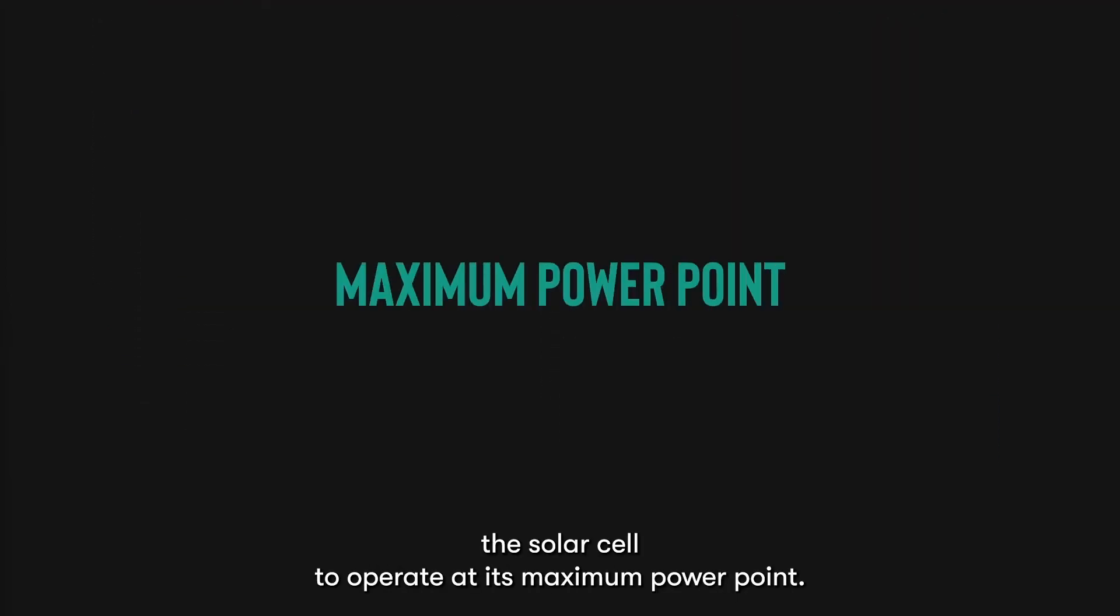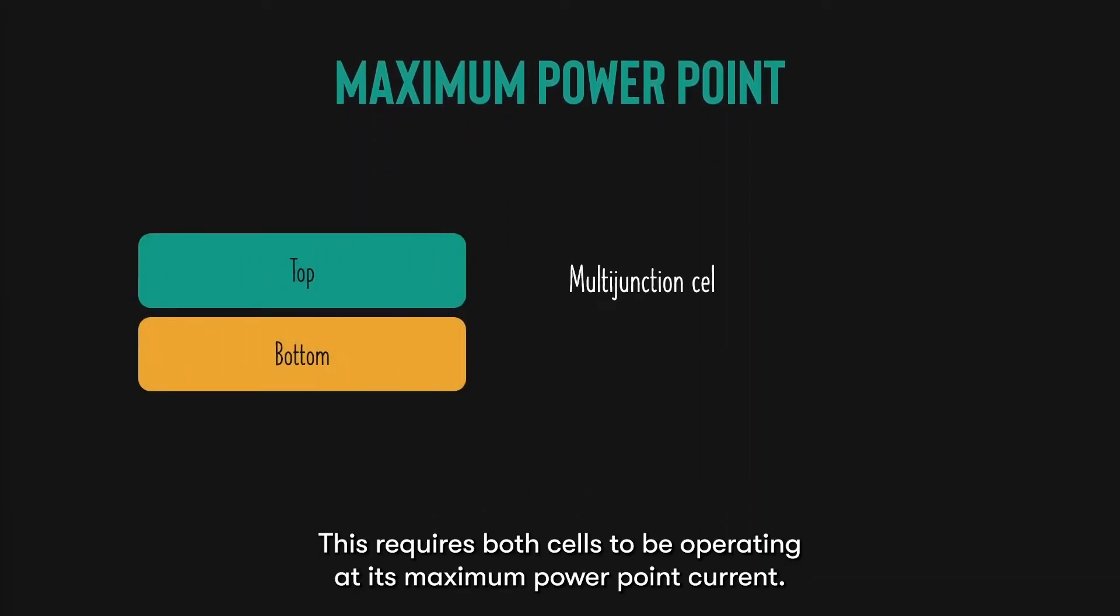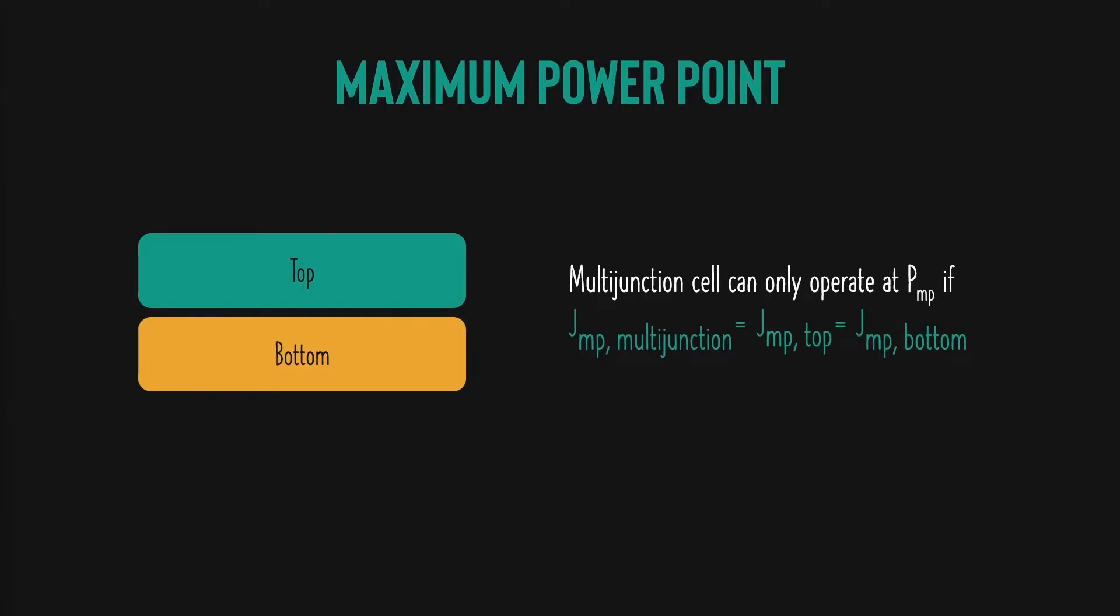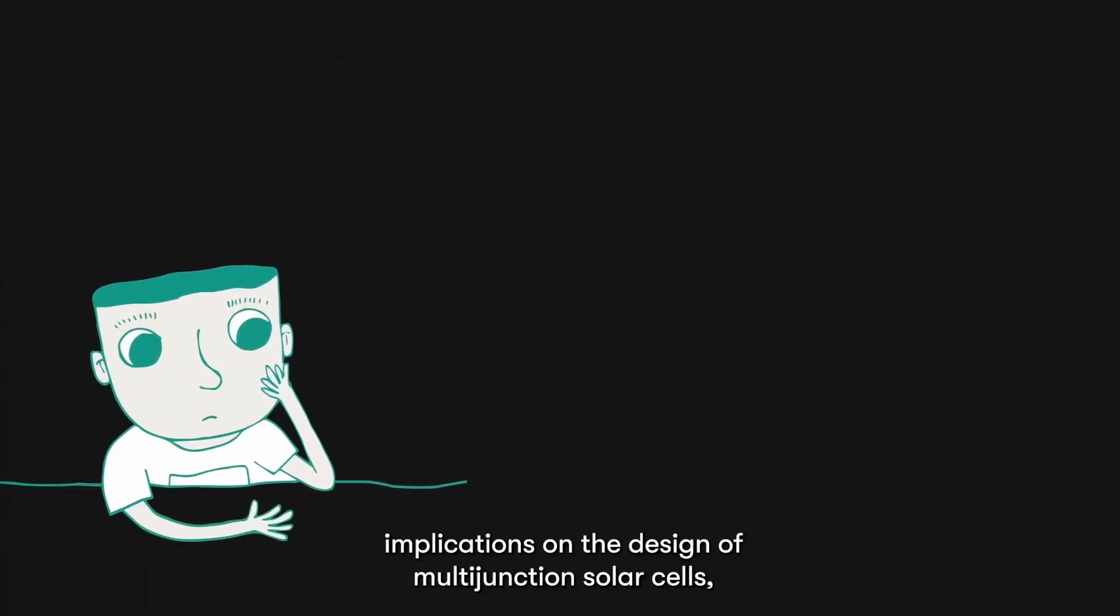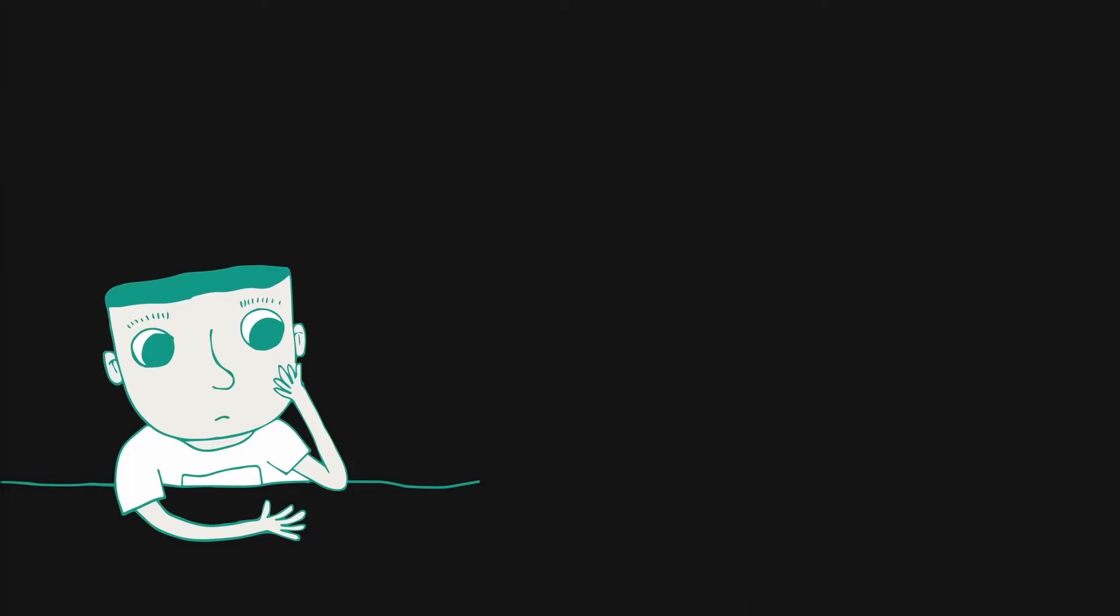We know that we always want the solar cell to operate at its maximum power point. This requires both cells to be operating at its maximum power point current. But if the short circuit currents of both cells are different, it's a good indication that the maximum power points of both cells are different, and hence one cell is always not operating at its maximum power point. This is why current matching is critical. The need for current matching has profound implications on the design of multi-junction solar cells, especially in determining the optimal bandgap of the solar cell.